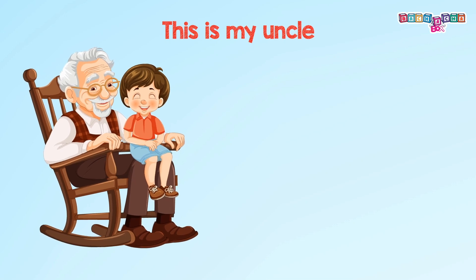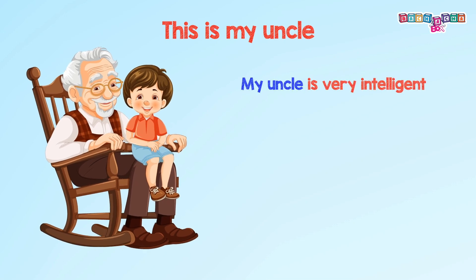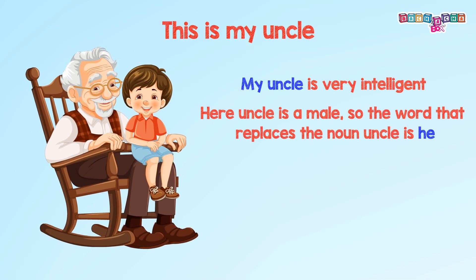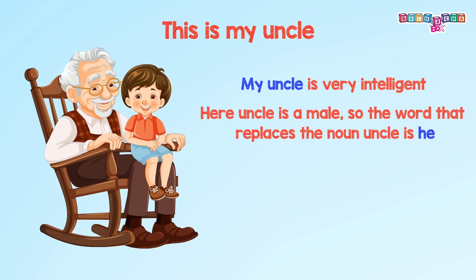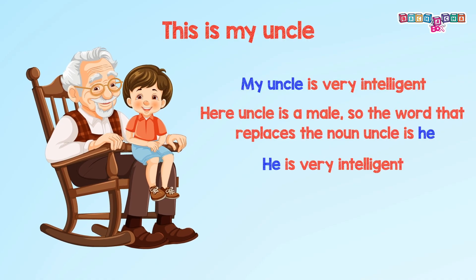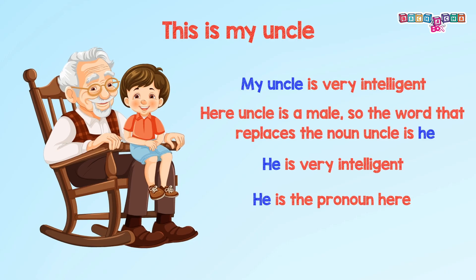This is my uncle. My uncle is very intelligent. Here, uncle is a male, so the word that replaces the noun 'uncle' is 'he.' So the sentence will be: This is my uncle. He is very intelligent. 'He' is the pronoun here.